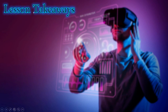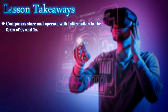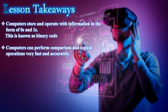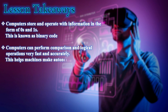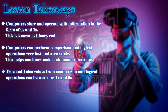Lesson takeaways: computers store and operate with information in the form of zeros and ones — this is known as binary code. Computers can perform comparison and logical operations very fast and accurately, which helps machines make autonomous decisions. True and false values from comparison and logical operations can be expressed as ones and zeros.